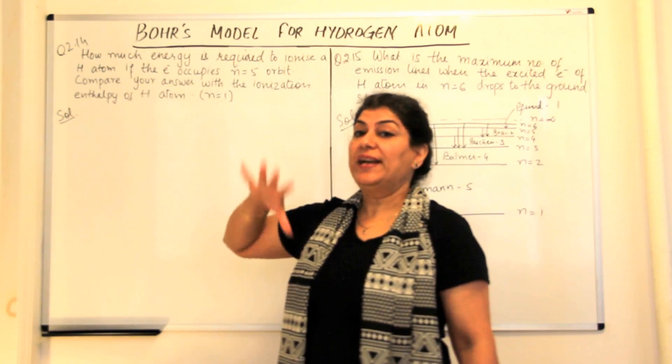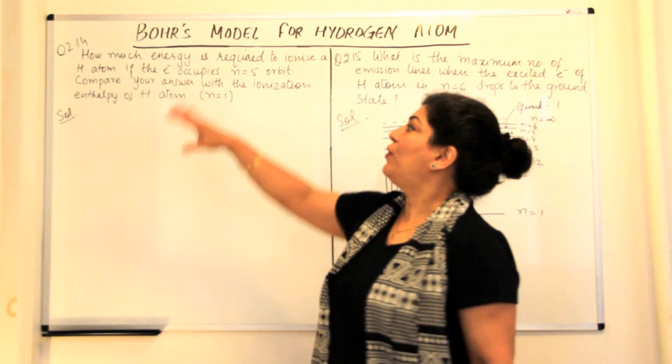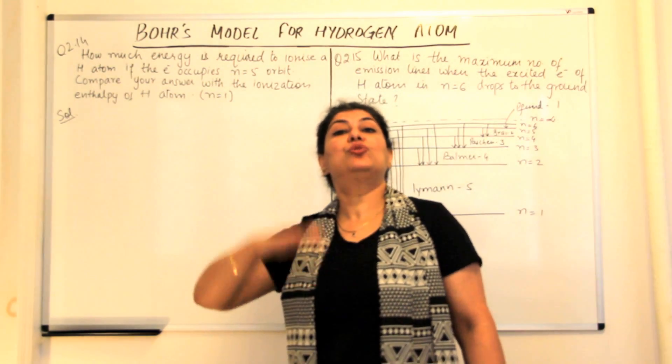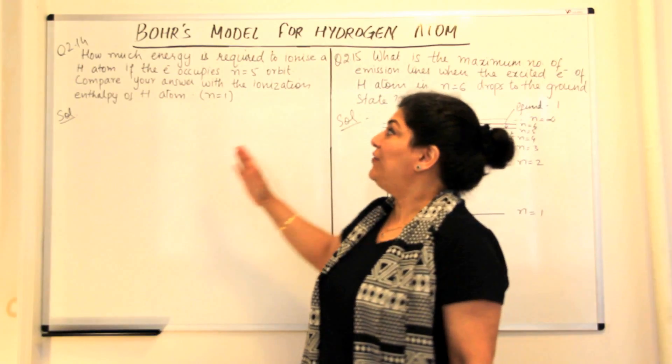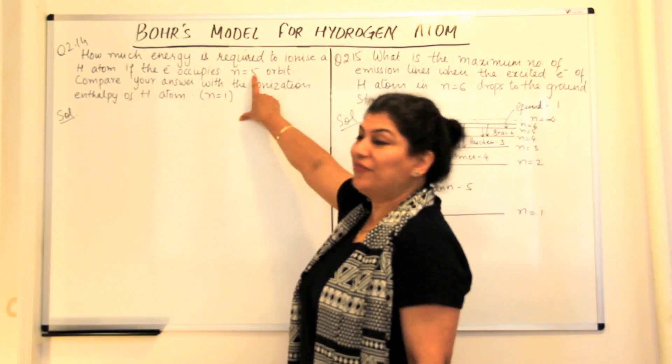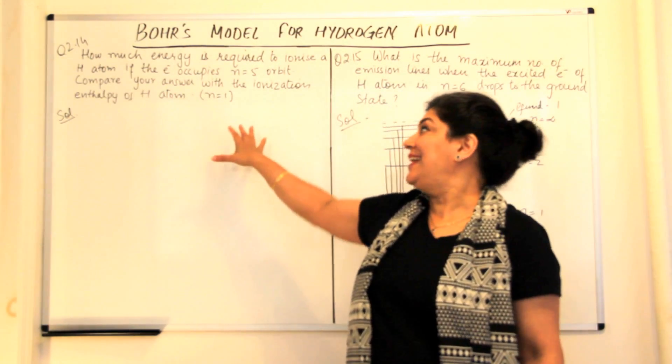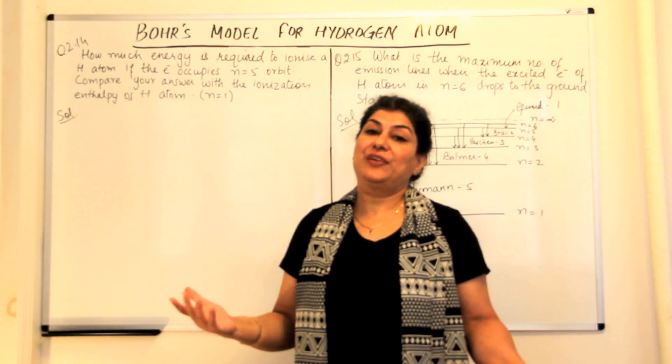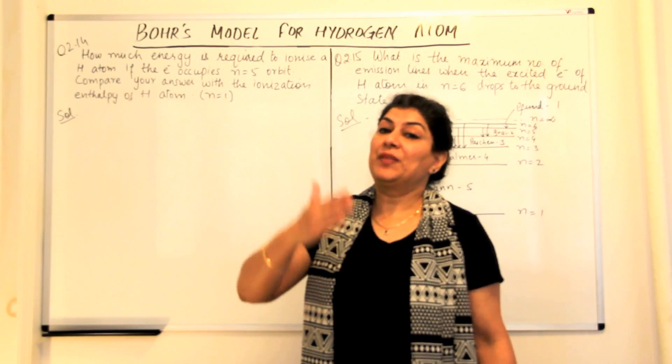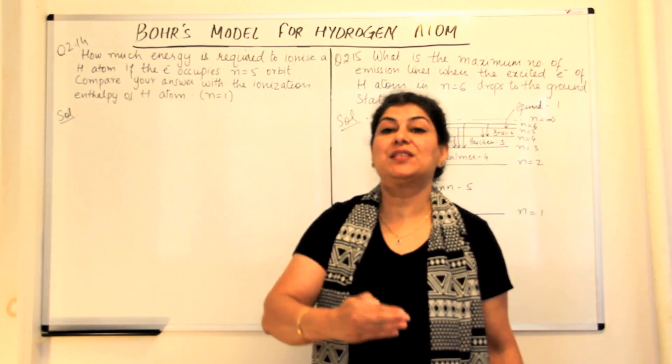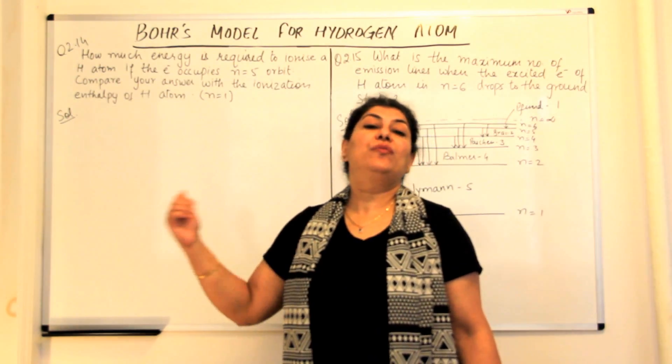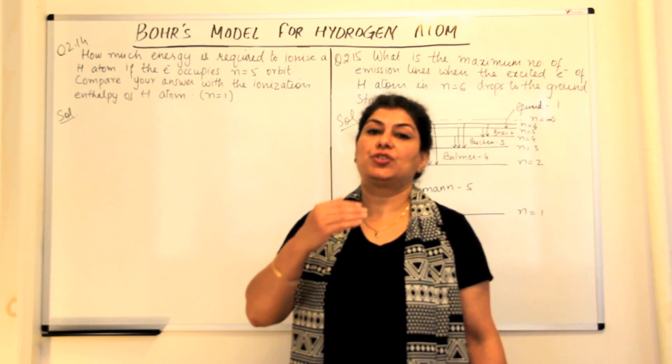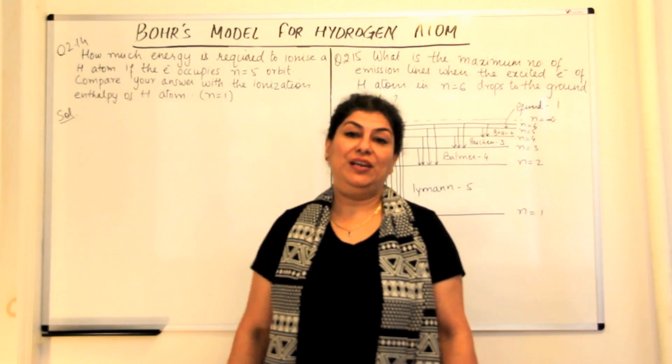Therefore for ionization, we want the electron to move from whatever shell is given to us to infinity. In the first case the electron is present in the fifth shell while in the second case it is present in the first shell. So we need to find out the energy difference between the electron when it is present in the fifth shell and when it transitions to infinity.